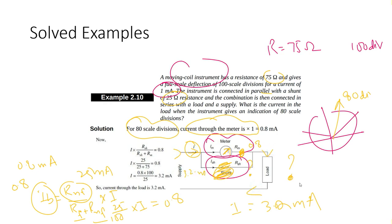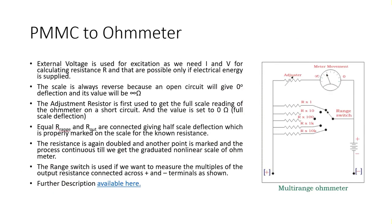The total current entering the parallel combination is 3.2 milliampere, which is the same current flowing through the series load. This was an interesting example using the current divider rule.